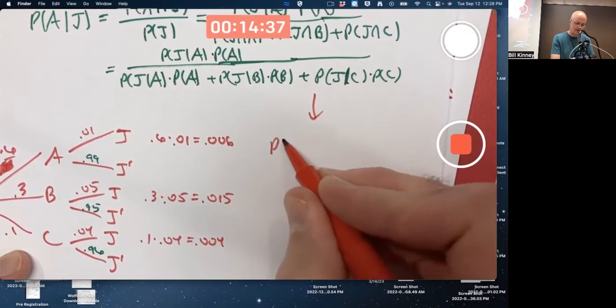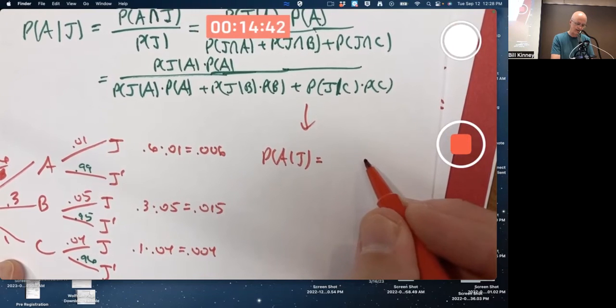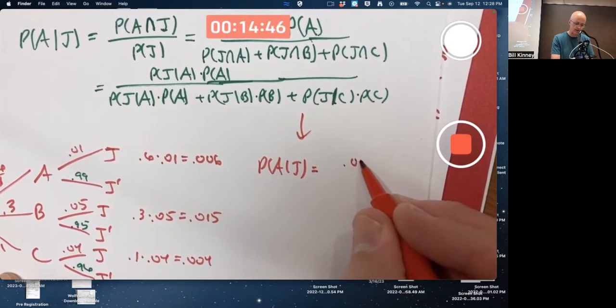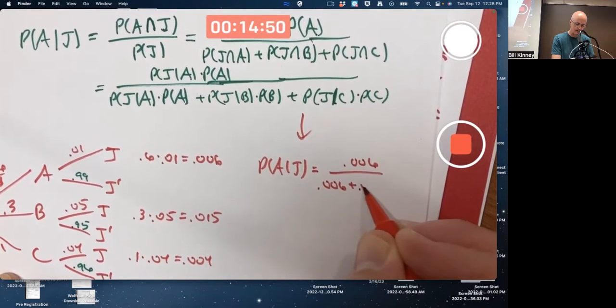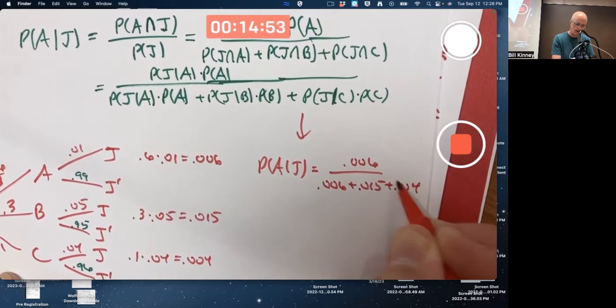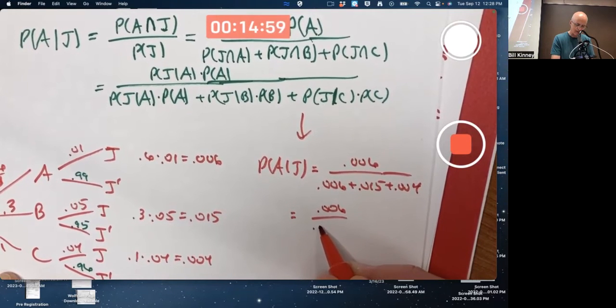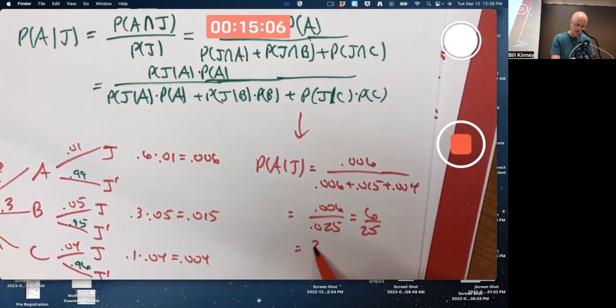The final answer for this first probability that we're after. I've done the products. The numerator is going to be point zero zero six. The denominator is going to be point zero zero six plus point zero one five plus point zero zero four. So we get point zero zero six divided by what? Point zero two five. Hey, I don't even need a calculator for that. That's six twenty fifths or twenty four one hundredths. Looks like it's point two four.